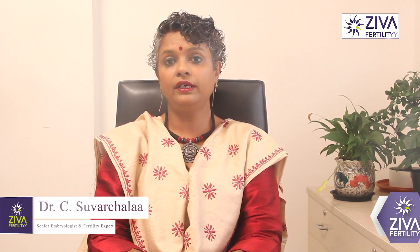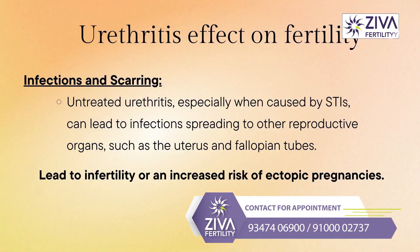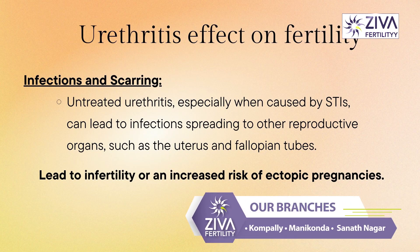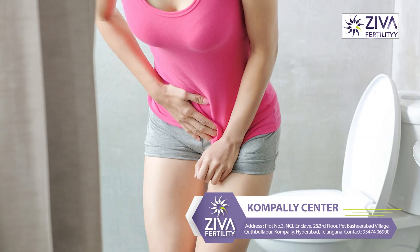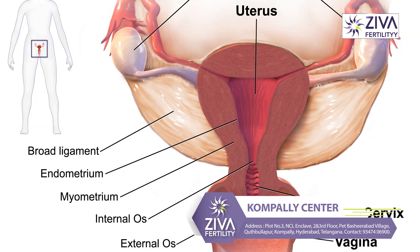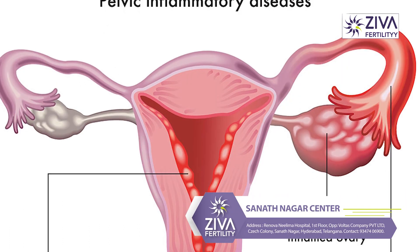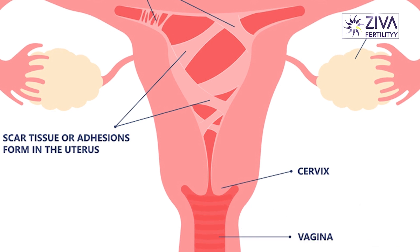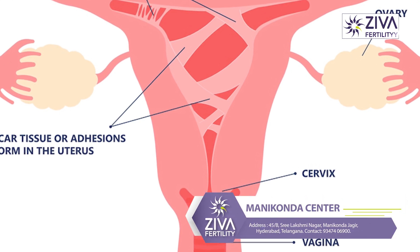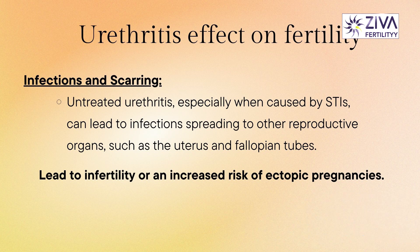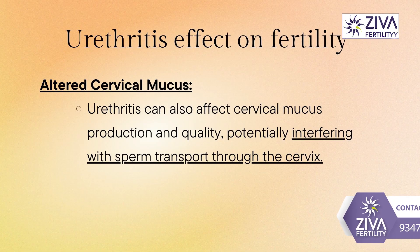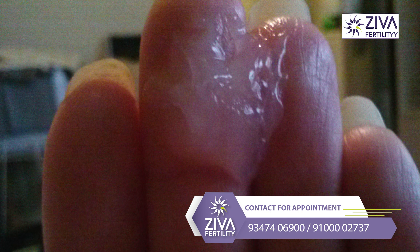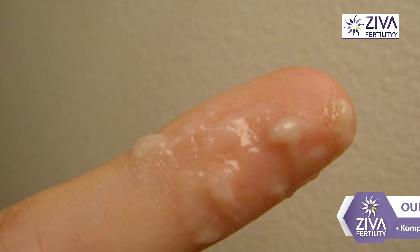The effect on fertility is that urethritis can cause infections and scarring. Untreated urethritis, especially when caused by sexually transmitted infections, can lead to infections spreading to other reproductive organs such as the uterus and the fallopian tubes. This can result in pelvic inflammatory disease, which may cause scarring or blockages in the fallopian tubes, blocking the passage of sperm to the egg, leading to infertility or an increased risk of ectopic pregnancy. Urethritis can also affect cervical mucus production and quality, potentially interfering with sperm transport through the cervix.